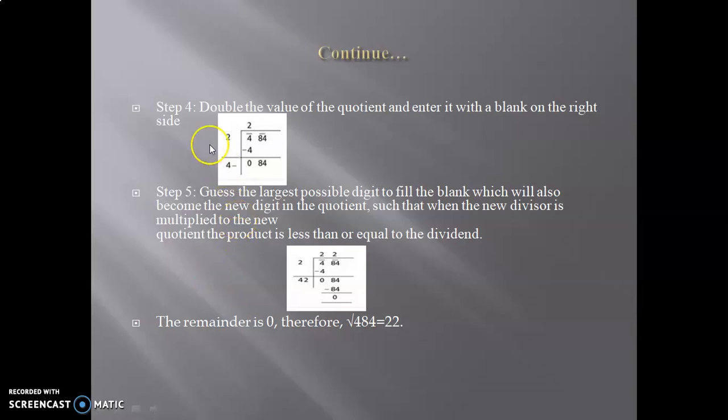Step 4: Double the value of the quotient and enter it with a blank on the right side. Guess the largest possible digit to fill the blank, which will also become the new digit in the quotient.